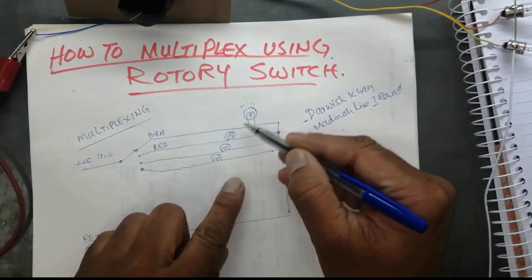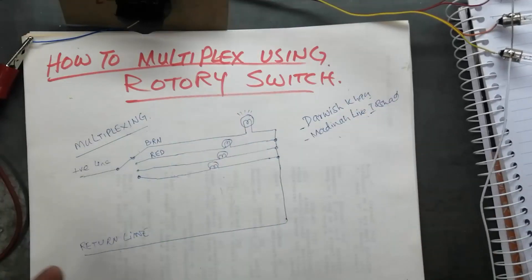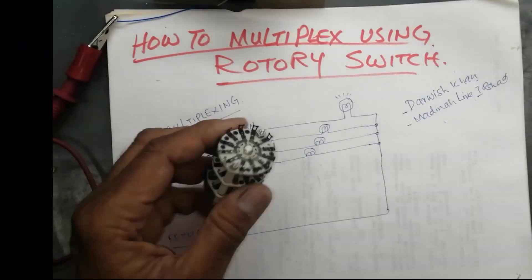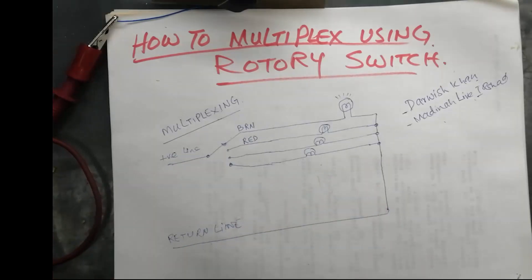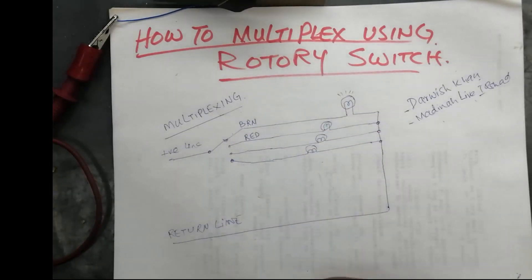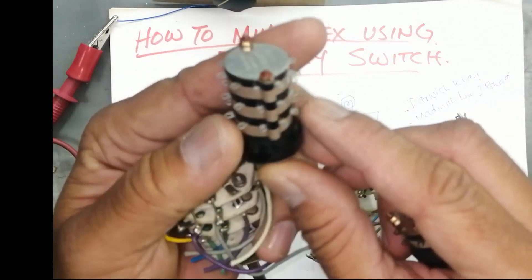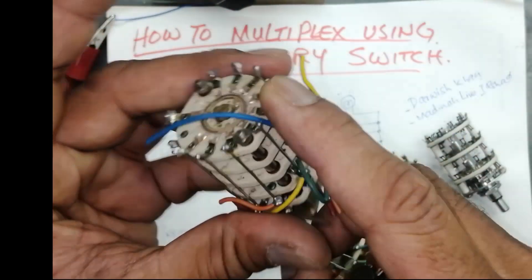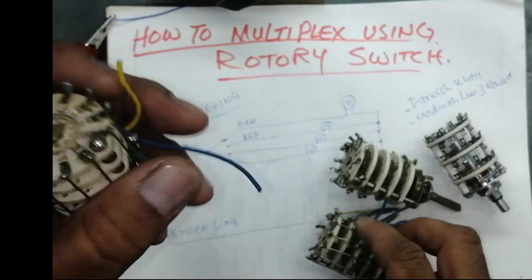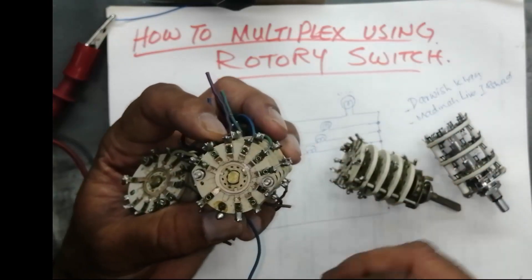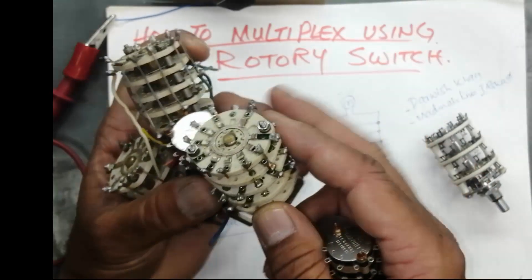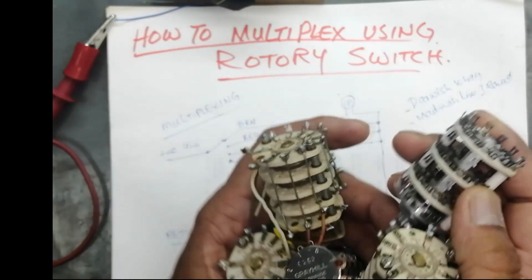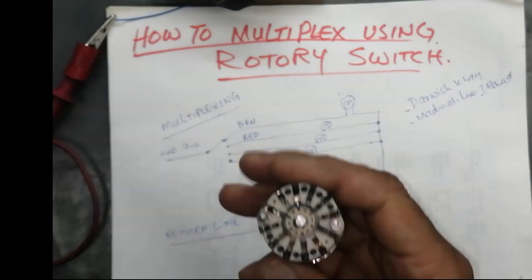Here I have four lines — one, two, three, four — and I want to connect them. First of all we need a rotary switch. Rotary switches are available in many types, you can use them. I have this type of switch — a three-stage switch and a four-stage switch. Every switch has a common line and output lines. We have uploaded a very detailed video about what is a rotary switch and how it works — I will give the link in the description.